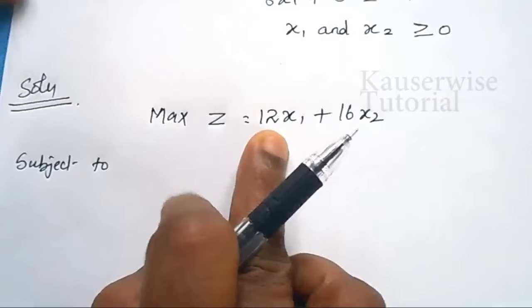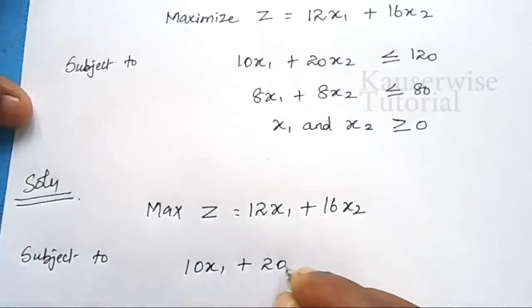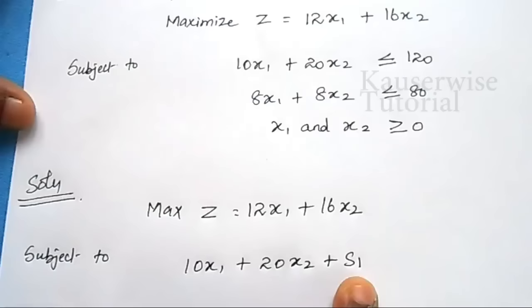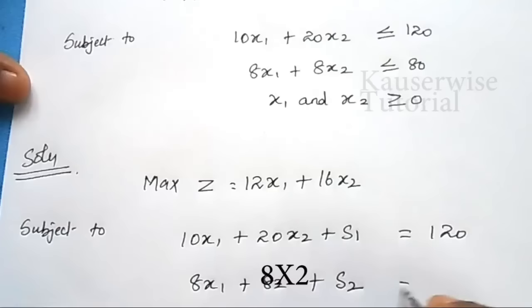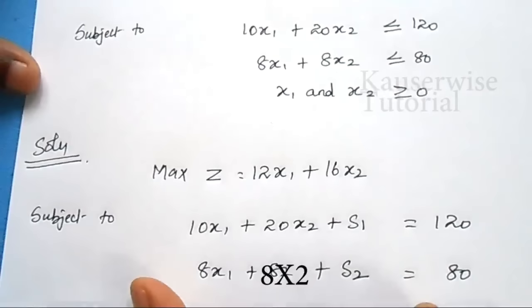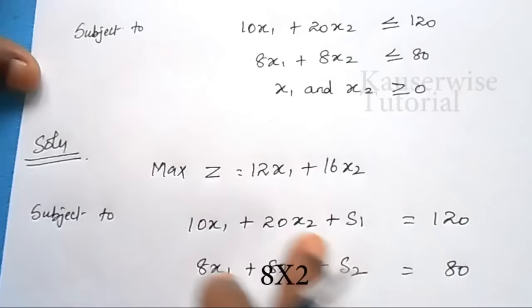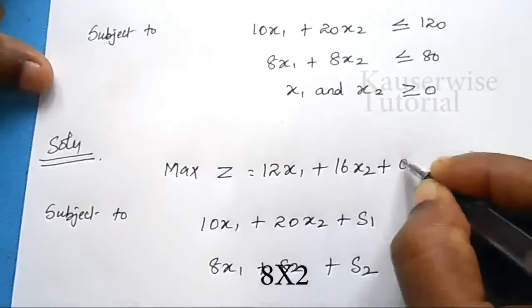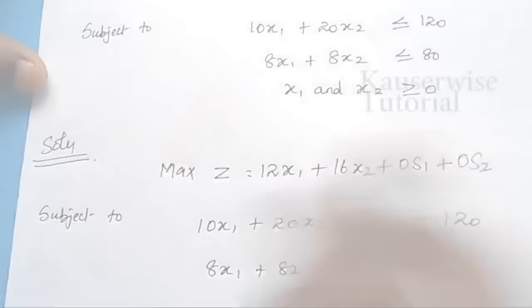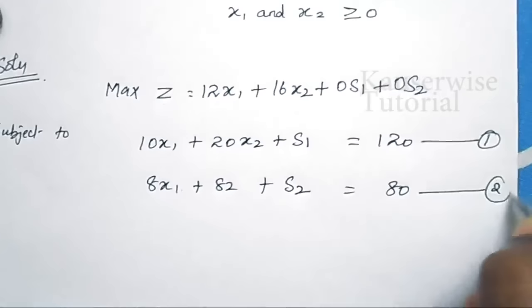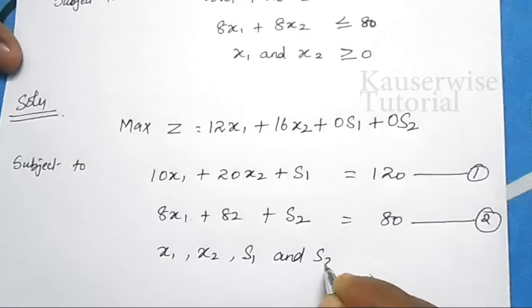Subject to two constraints. While writing the two constraints, you need to add slack variables. In the first equation, add s1, so it equals 120. In the second constraint, add s2. For each constraint, you need to add one slack variable in order to balance the constraint. So here we have added two slack variables.